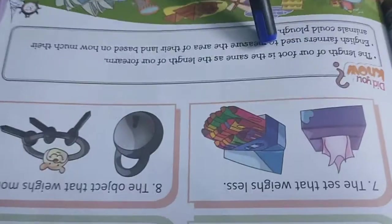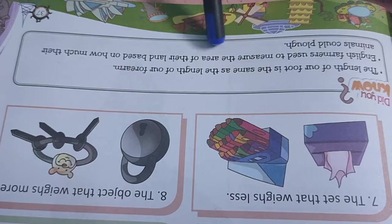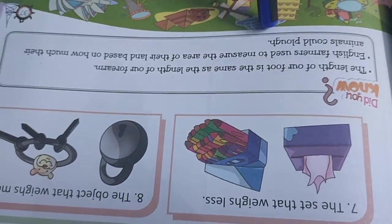The length of our foot is the same as the length of our forearm. English farmers used to measure the area of their land based on how much their animals could plough. Thank you.